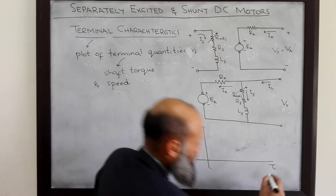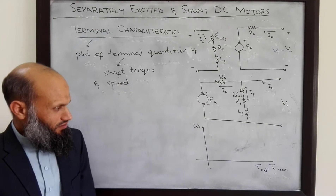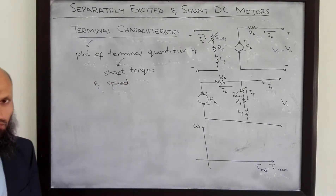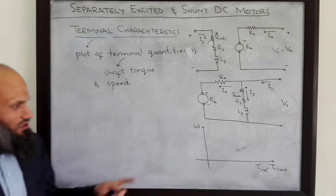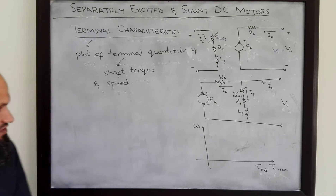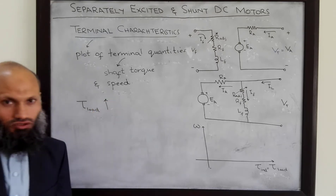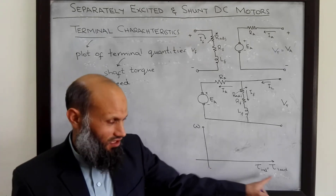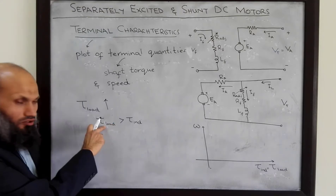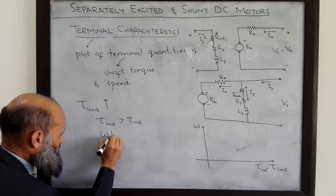At steady state, load torque and induced torque become equal. On the horizontal axis we have induced torque, which at steady state equals load torque, and on the vertical axis we have the speed of rotation of the rotor. First we shall discuss these characteristics intuitively. When we increase the load torque connected to the motor, during the transient the load torque will exceed the induced torque, and that will result in a decrease in the speed of the motor.